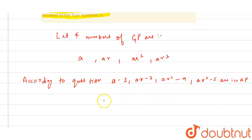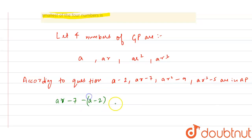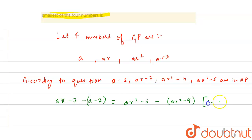In an AP, the common difference is constant. So we can write: AR minus 7 minus (A minus 2) equals AR squared minus 9 minus (AR minus 7). These expressions represent the common differences between consecutive terms.